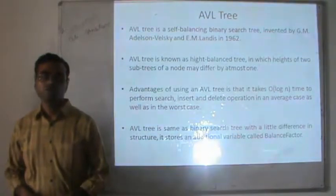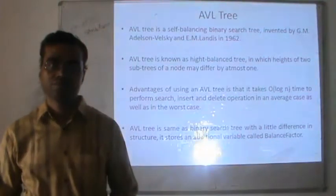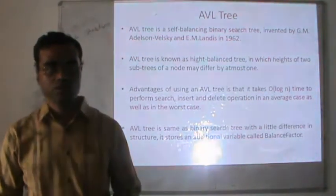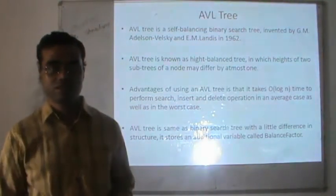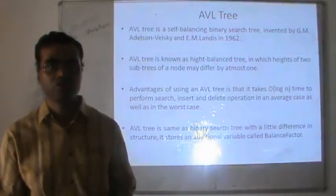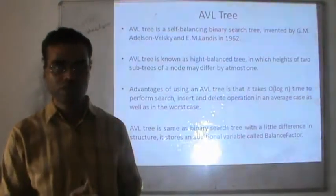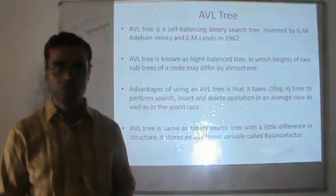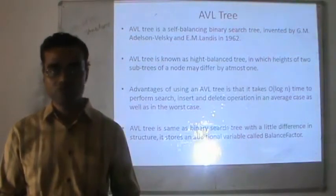The AVL tree is also known as the height-balanced tree. As we insert a node, it keeps on balancing at every insertion so that the balance factor will always remain the same. The balance factor possible with every node is either minus one, zero, or one. If any node gets a balance factor other than these three values, the whole tree gets rebalanced again. So every tree is also known as the balanced tree or the height-balanced tree.